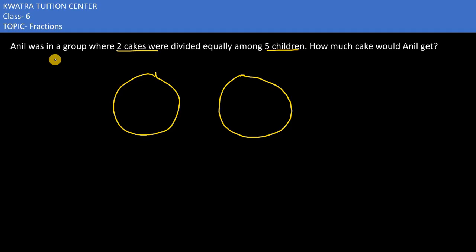Now we can understand that there are only 2 cakes. So let's divide this cake into 5 equal parts. Let's try to divide it in 5 parts and try to understand how many Anil would get. One of the children from this is Anil.